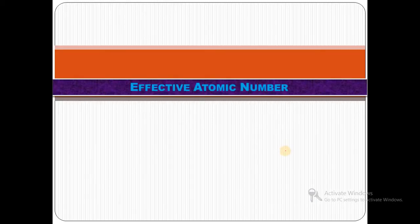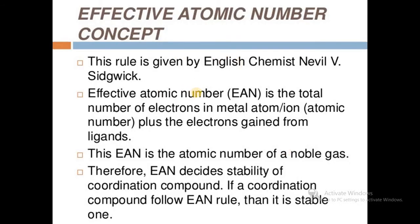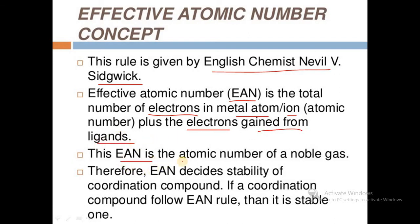Next we will see the Effective Atomic Number (EAN) concept. This rule was given by English chemist N.V. Sidgwick. The effective atomic number (EAN) is the total number of electrons in the metal atom or ion — that is, the atomic number — plus the electrons gained from the ligands. The effective atomic number equals the atomic number of a noble gas. Therefore, EAN decides the stability of a coordination compound. If a coordination compound follows the EAN rule, then it is a stable one, and if it does not obey the EAN rule, then that coordination compound is an unstable one.